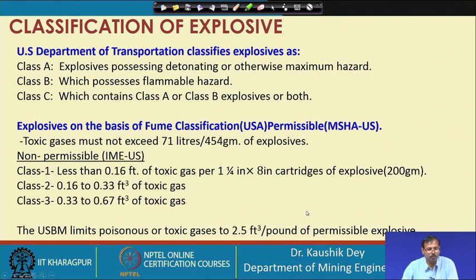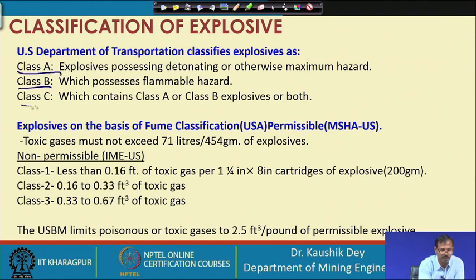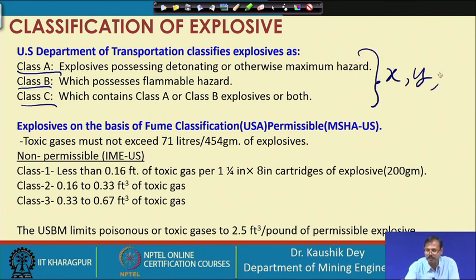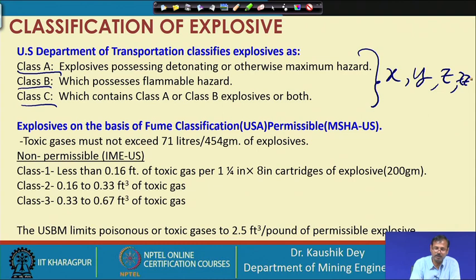This is the classification of explosives as per US standards. In the US, explosives are classified as class A — possessing detonating or maximum hazard; class B — possessing flammable hazard; and class C — possessing both class A and class B characteristics. This is similar to our X, Y, Z, and ZZ classification.